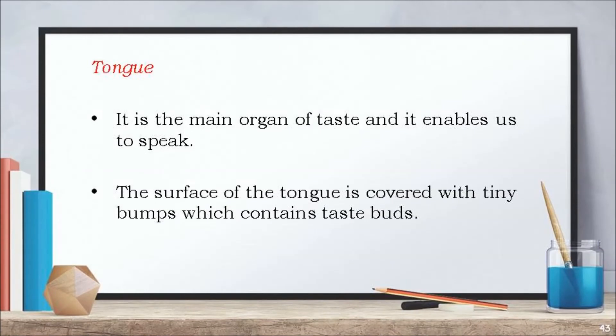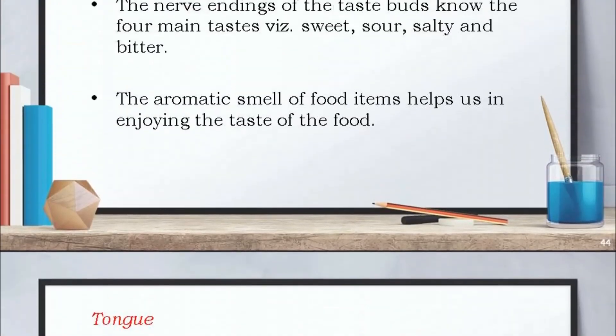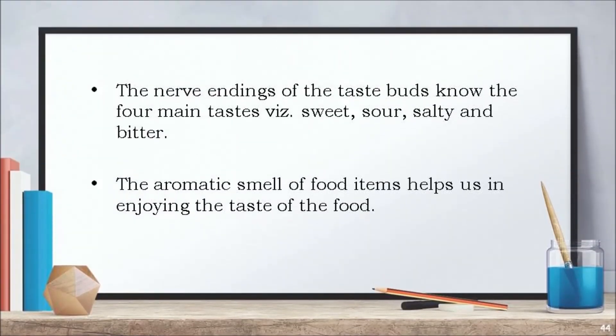The tongue is the main organ of taste and it enables us to speak. The surface of the tongue is covered with tiny bumps which contain taste buds. The nerve endings of the taste buds detect the four main tastes: sweet, sour, salty, and bitter. The aromatic smell of food items also helps us in enjoying the taste of food.